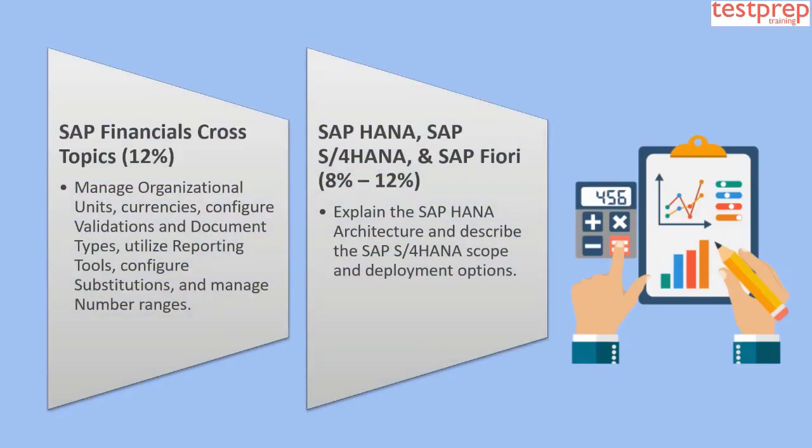Domain 5: SAP Financials Cross Topics, which comprises 12% weightage in the exam. This covers managing organizational units, currencies, and document types, utilizing reporting tools, configuring substitutions, and managing number ranges.